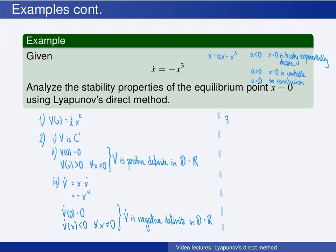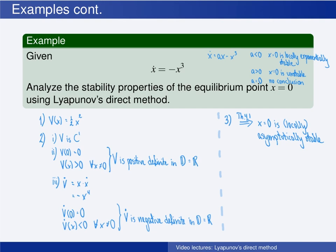Then we can conclude by Theorem 4.1, Lyapunov's stability theorem, that the origin is locally asymptotically stable. Note that the conditions for being a strict Lyapunov function are satisfied in the whole state space. One question that then arises is: can we then conclude that the origin is globally asymptotically stable?